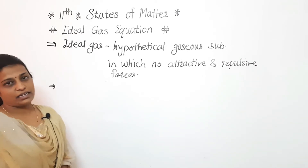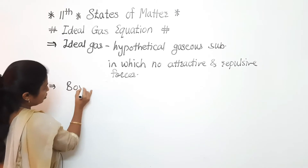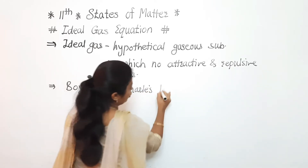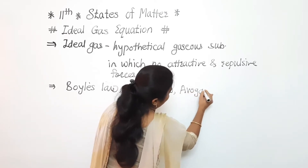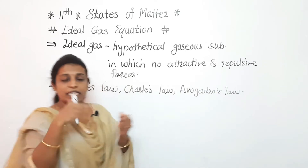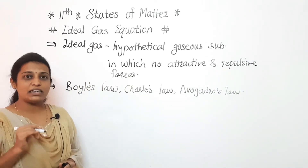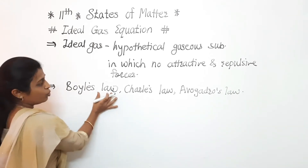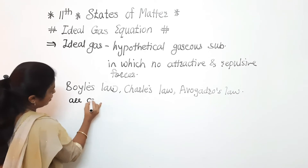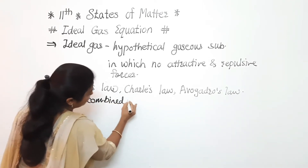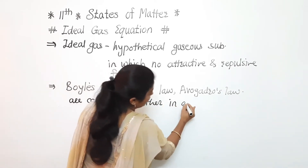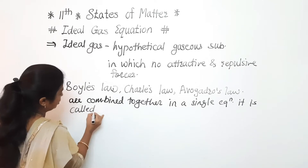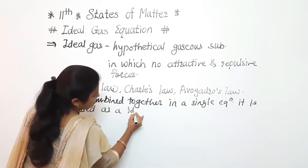Now let's discuss the ideal gas equation. As we know, Boyle's law, Charles law, and Avogadro's law are all combined together into a single equation. That single equation is called the ideal gas equation.